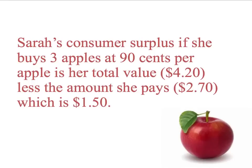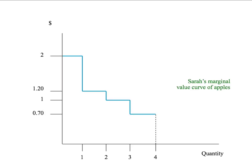In the last presentation, we worked out Sarah's consumer surplus if she buys three apples at 90 cents per apple, and we noted that was her total value of $4.20, less the amount she pays, which is 3 times 90 cents — $2.70 — giving us $1.50 consumer surplus to Sarah from buying the three apples. And we saw how we could use Sarah's marginal value curve for apples to work out that consumer surplus.